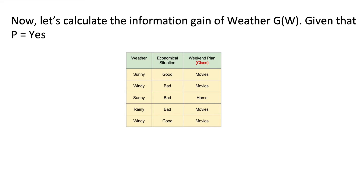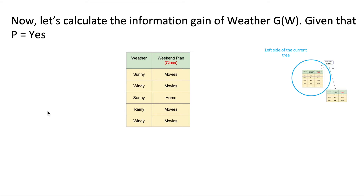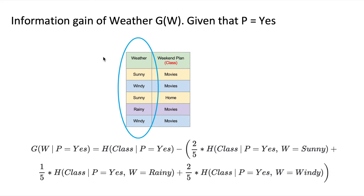Now we calculate the information gain of weather on the left side of the tree (live with parents = yes). We select rows according to the different values weather can take: two sunny, two windy, and one rainy. The conditional entropies now all include the condition that live with parents equals yes, plus the possible values of weather — sunny, rainy, and windy.